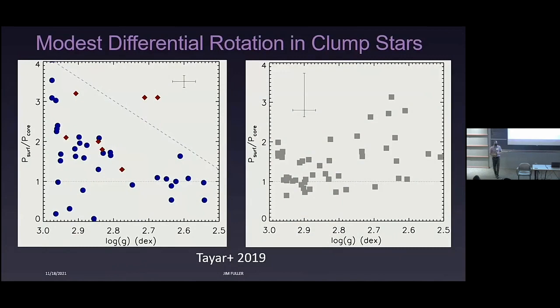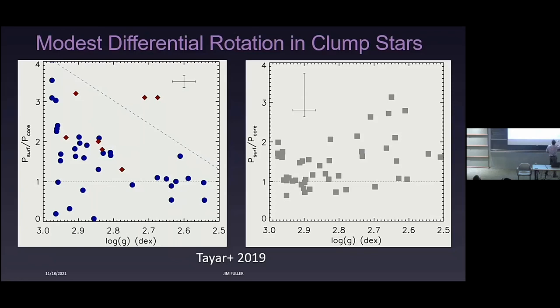Jamie's paper shows measurements of surface and core rotation rates of secondary clump stars — roughly two to three solar masses. For stars where the measurement could be made, the surface is typically rotating at periods something like twice the rotation rate of the core, so there's pretty strong coupling, but significant differential rotation. After correcting for selection biases, the inference is that the typical ratio of surface to core rotation rate is something like two, but with a lot of scatter.